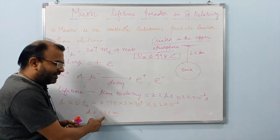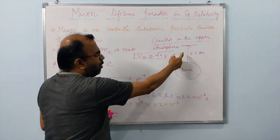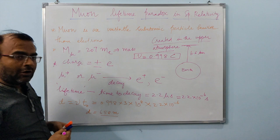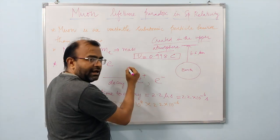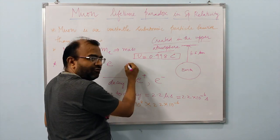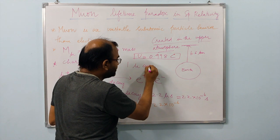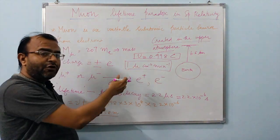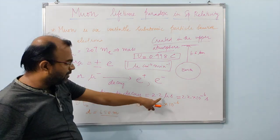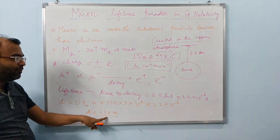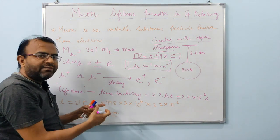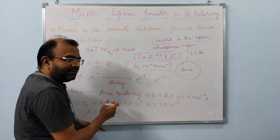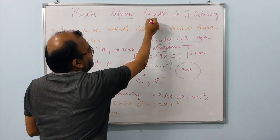If the muons can only travel 658 meters, how are they traveling six and a half kilometers from the upper atmosphere to Earth's surface? At sea level, the number of muons reaching Earth's surface is about one muon per centimeter squared per minute. With such a short decay time and a possible travel distance only one-tenth of what is required, how are muons reaching the surface in such numbers?